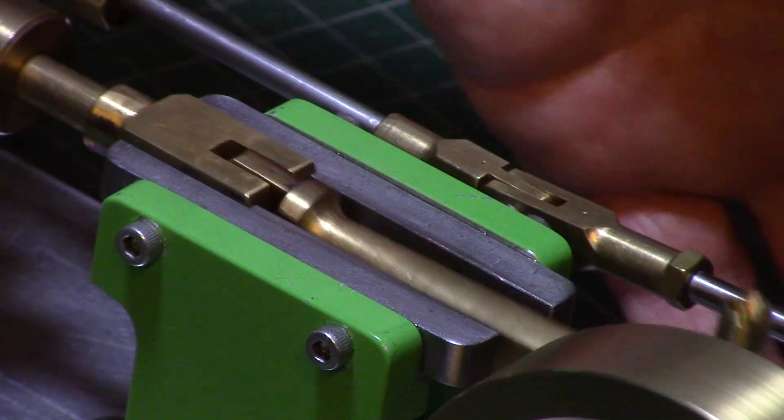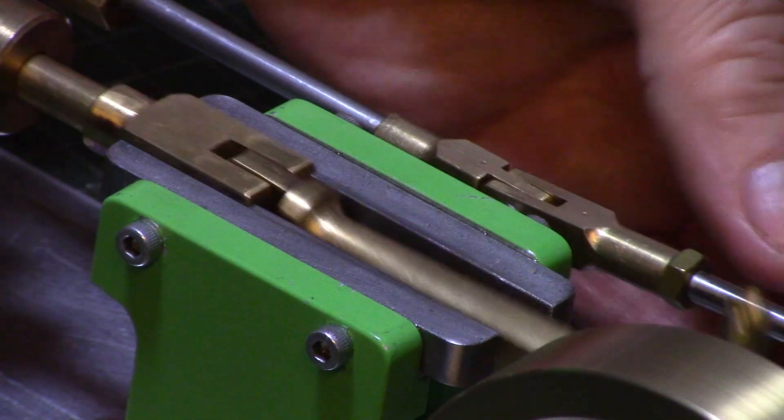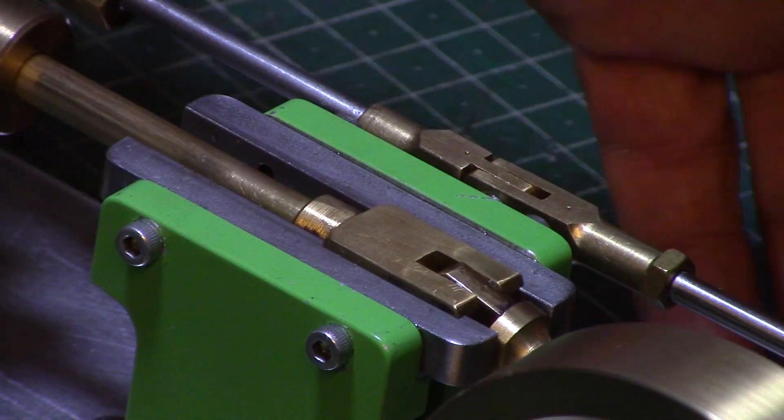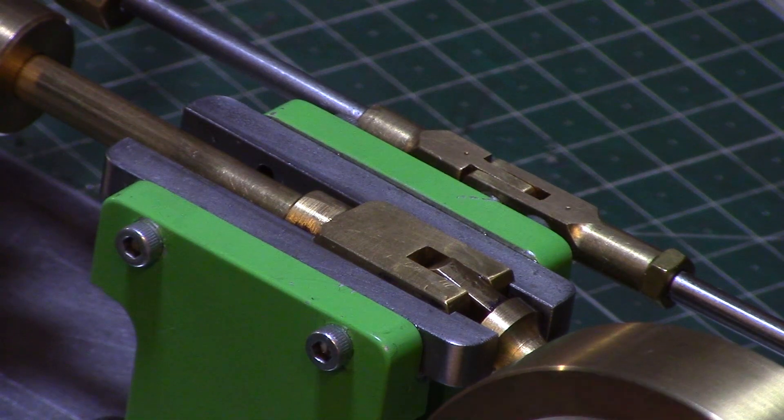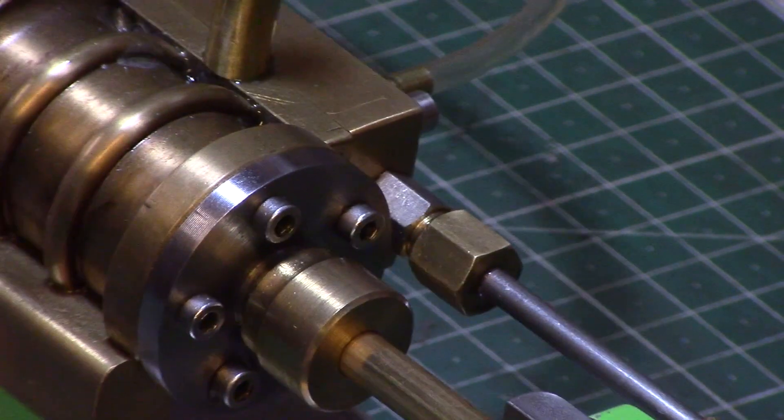These are two parallel pieces of quarter inch mild steel set on aluminium supports with machine screws. And this accurately aligns the piston rod with the cylinder.